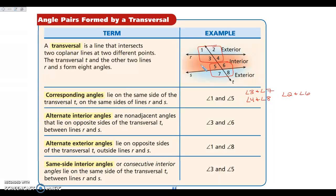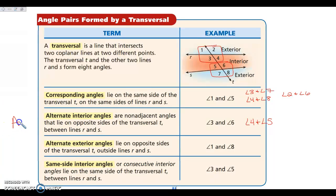Alternate interior angles are between the two lines — in the interior region. They lie on alternating sides of the transversal, one from each set of four angles. Angles 3 and 6 are alternate interior angles, one from each group, on alternating sides of the transversal. Angles 4 and 5 are another pair. We can abbreviate these as AIAs.